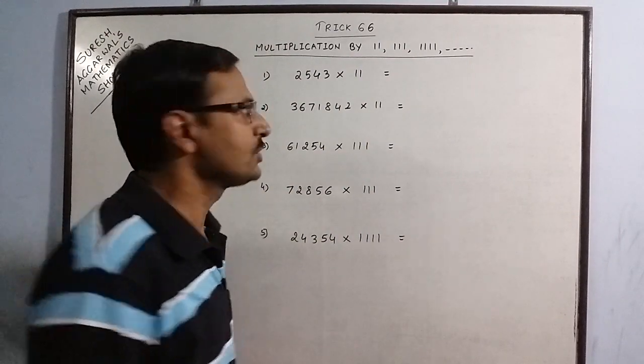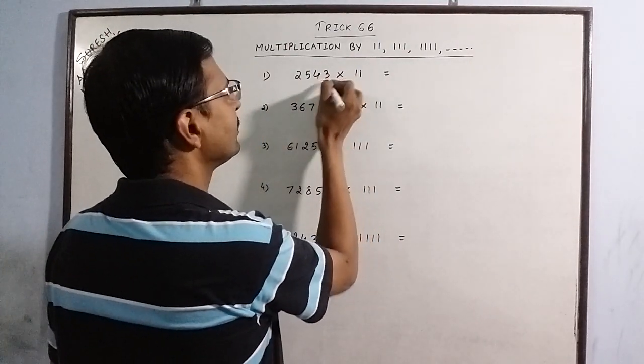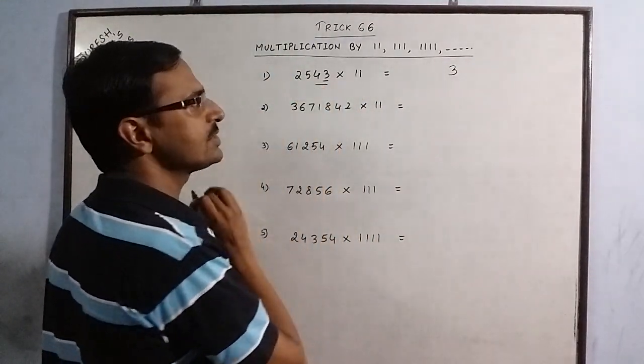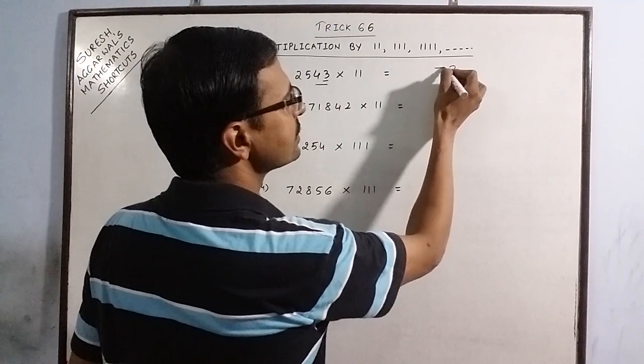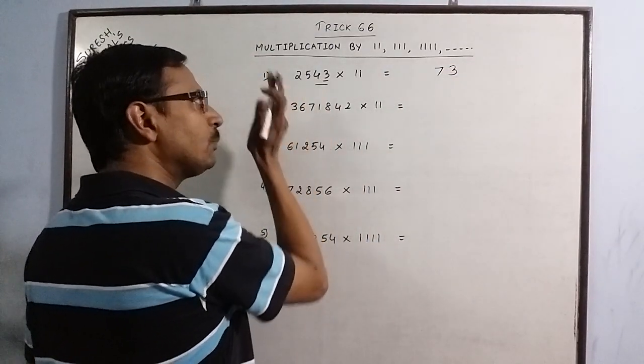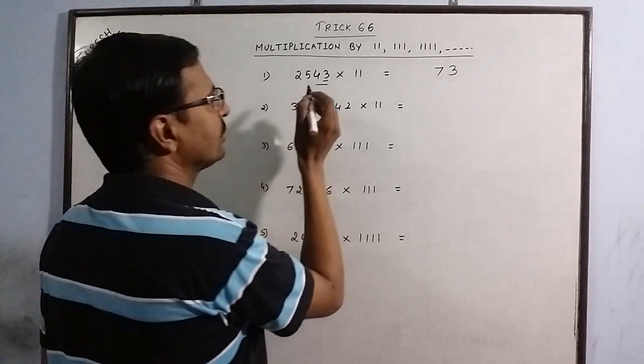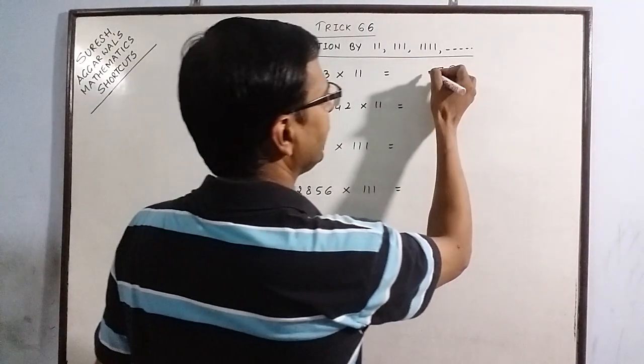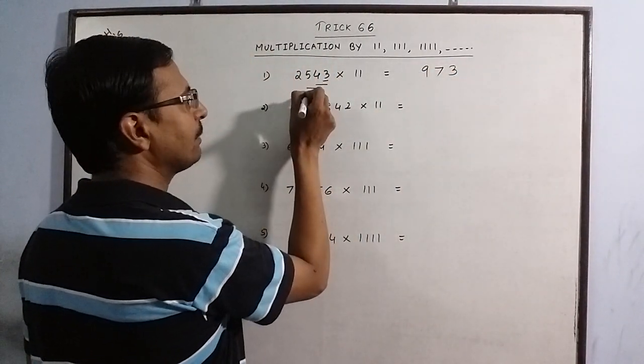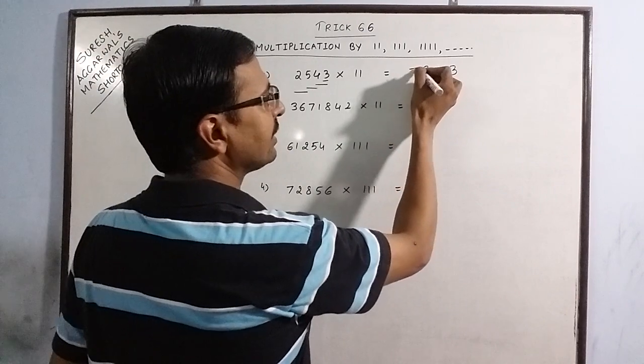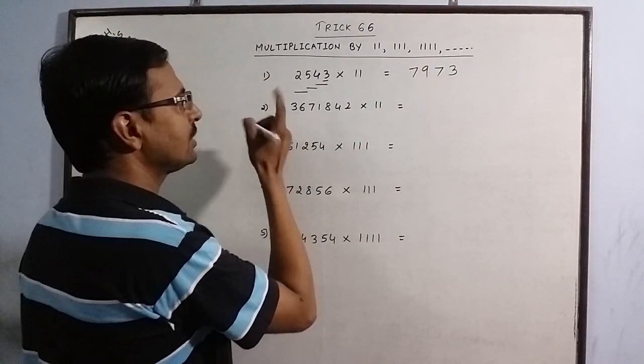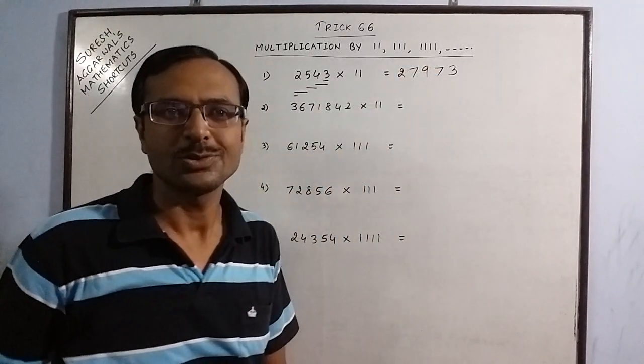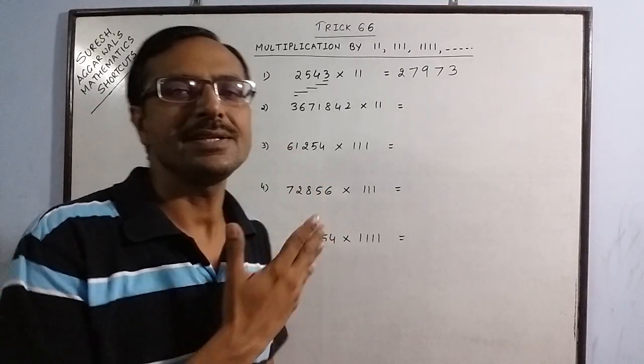When you have two ones, start from the unit digit 3, then add the unit and the tenth digit 3 plus 4 equals 7, then keep moving one digit towards the left. Now 3 plus 4 is over, now take 4 plus 5 is 9, move further, 5 plus 2 is 7 and now we are finished with all the digits. So the last digit is written as single digit 2 as it is. So there you have the product 27973.